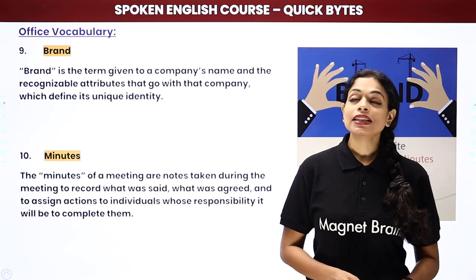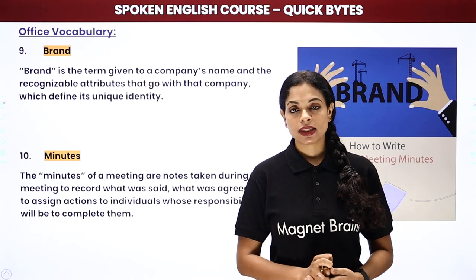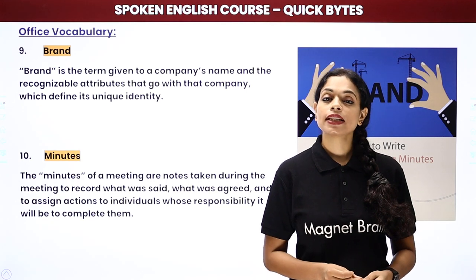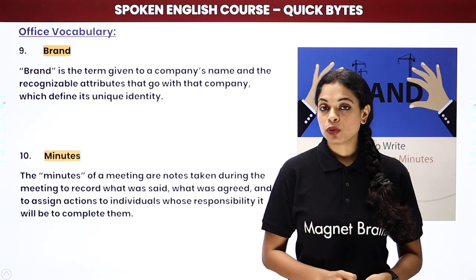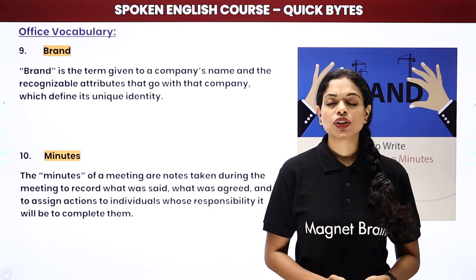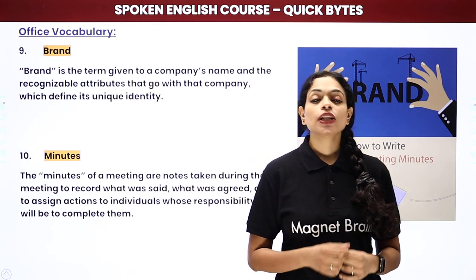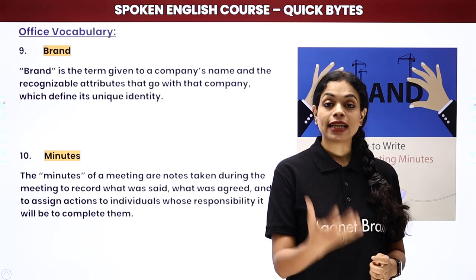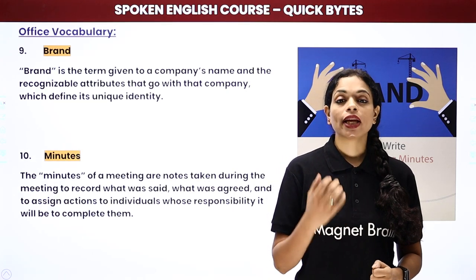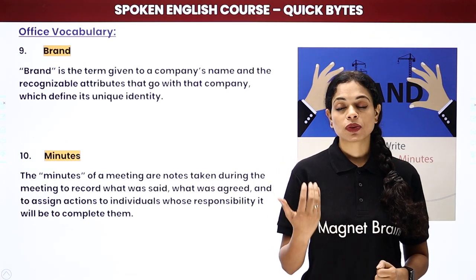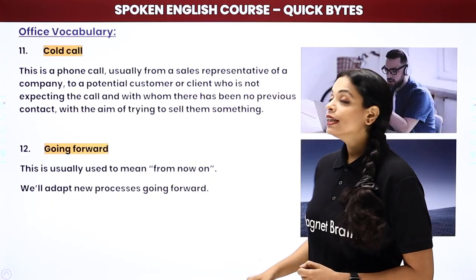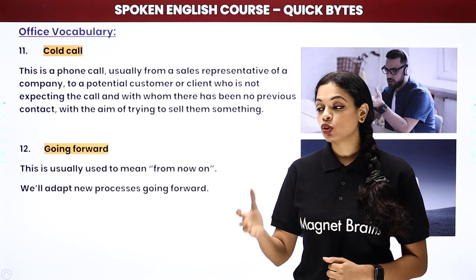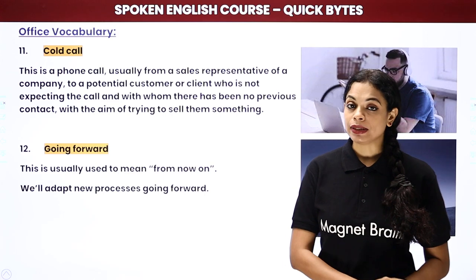Then, minutes of a meeting. Suppose you had a 2-3 hour meeting — you won't remember everything. So your secretary or executive assistant writes down everything that was discussed: what tasks were assigned to whom, what the targets are, what the deadlines are. They share all of this with everyone who attended the meeting. This is called minutes of the meeting — a minute-by-minute account of what happened, who said what, what points were made.